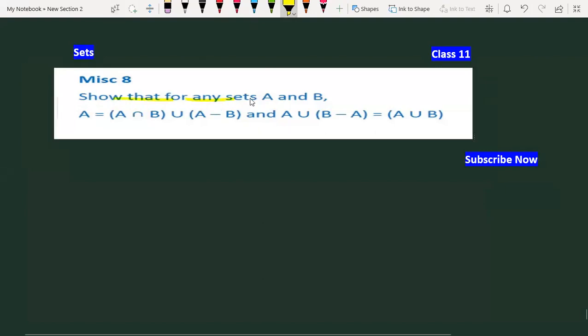For any sets A and B, we need to prove two parts. First part: A = (A ∩ B) ∪ (A - B). Second part: (A ∪ B) - A = A ∪ B. Let's do the first part.